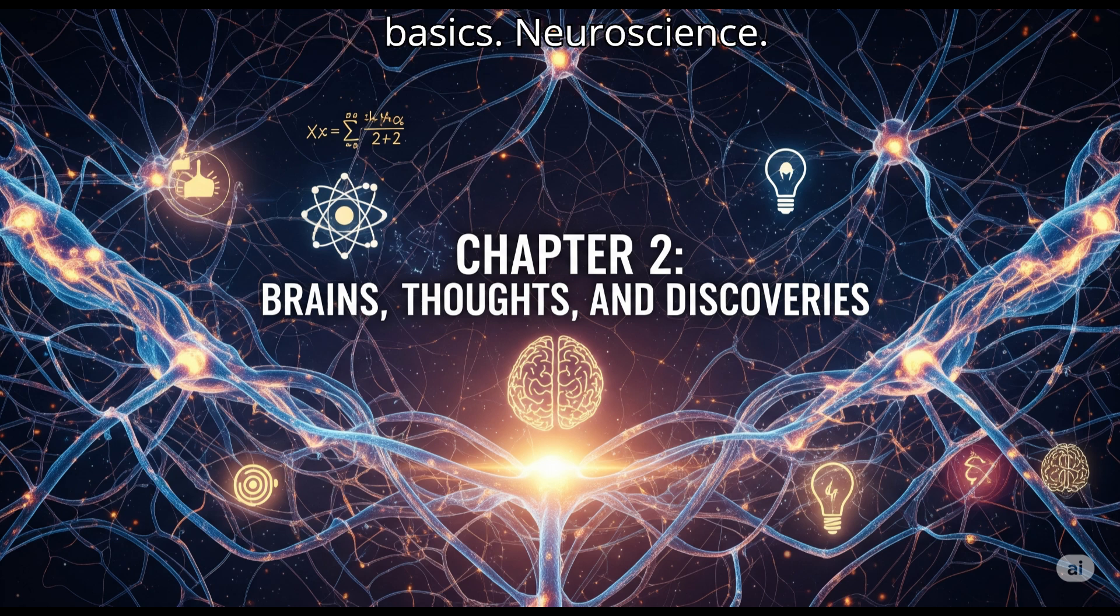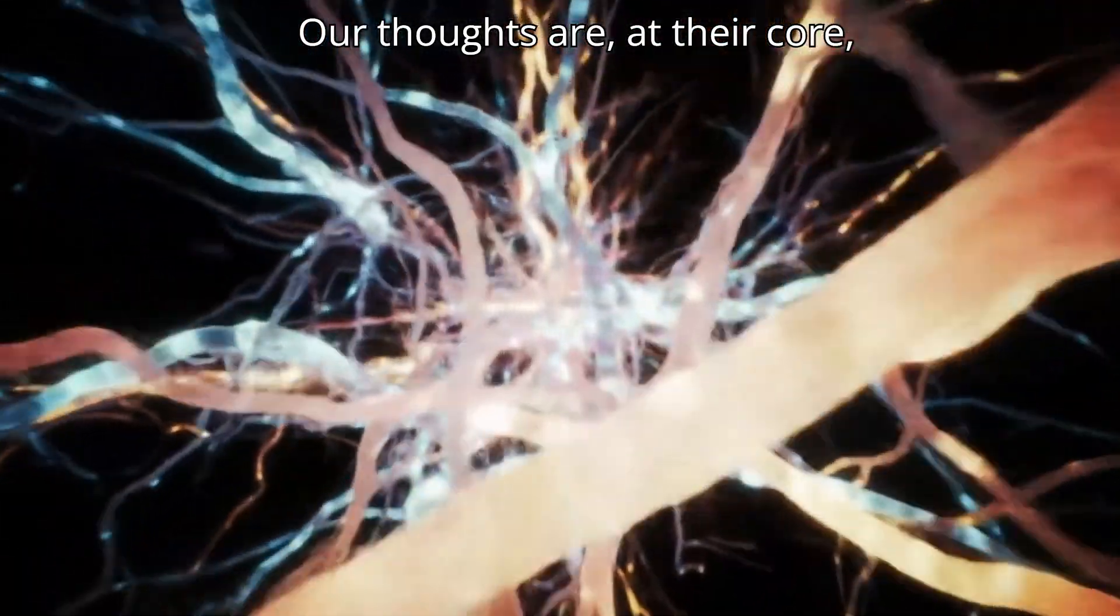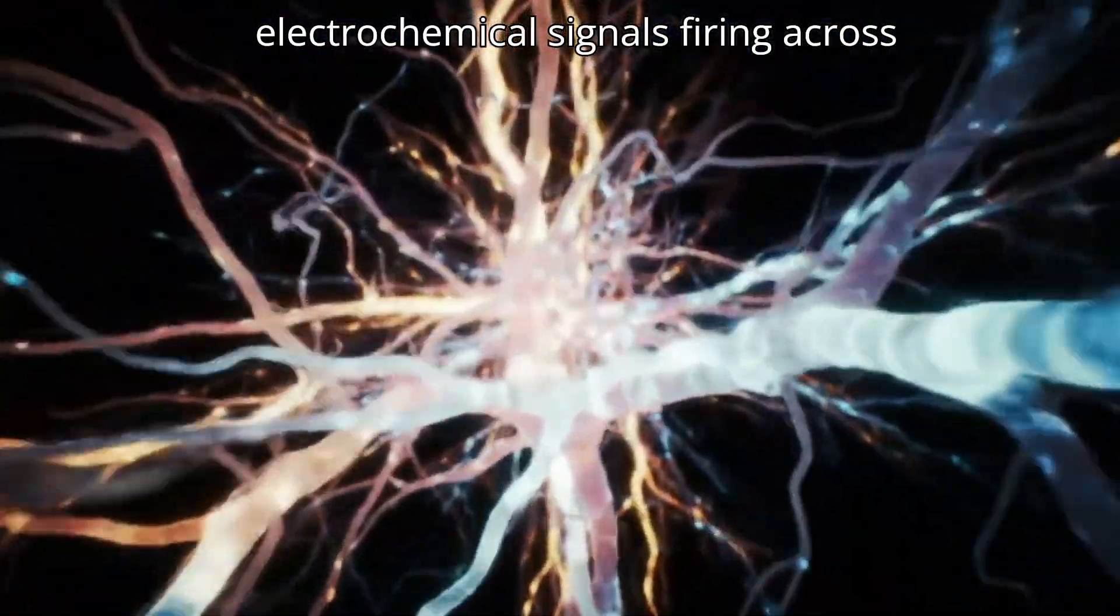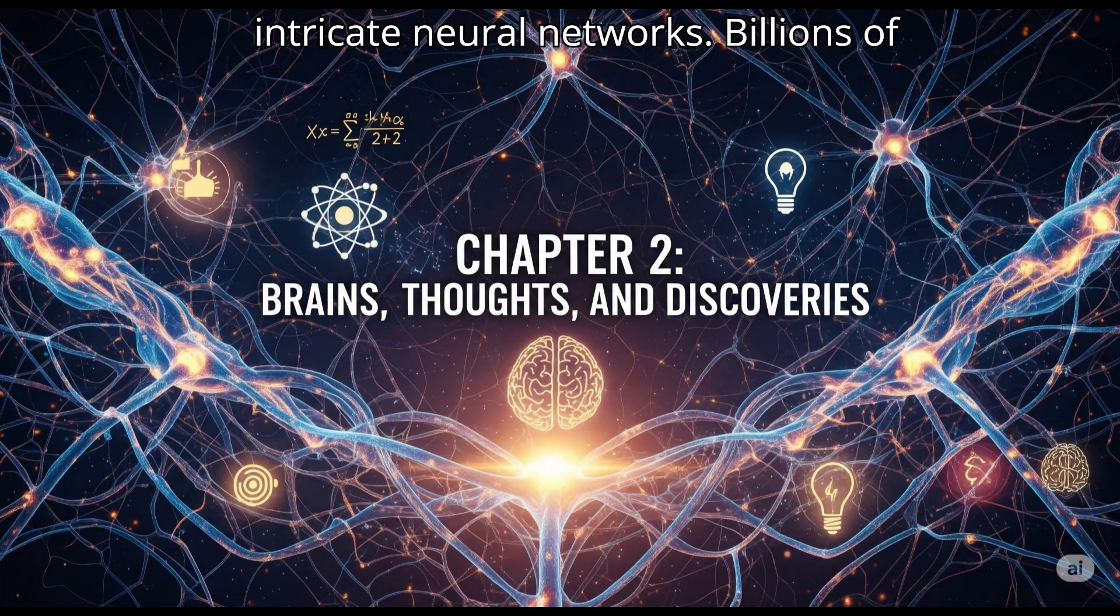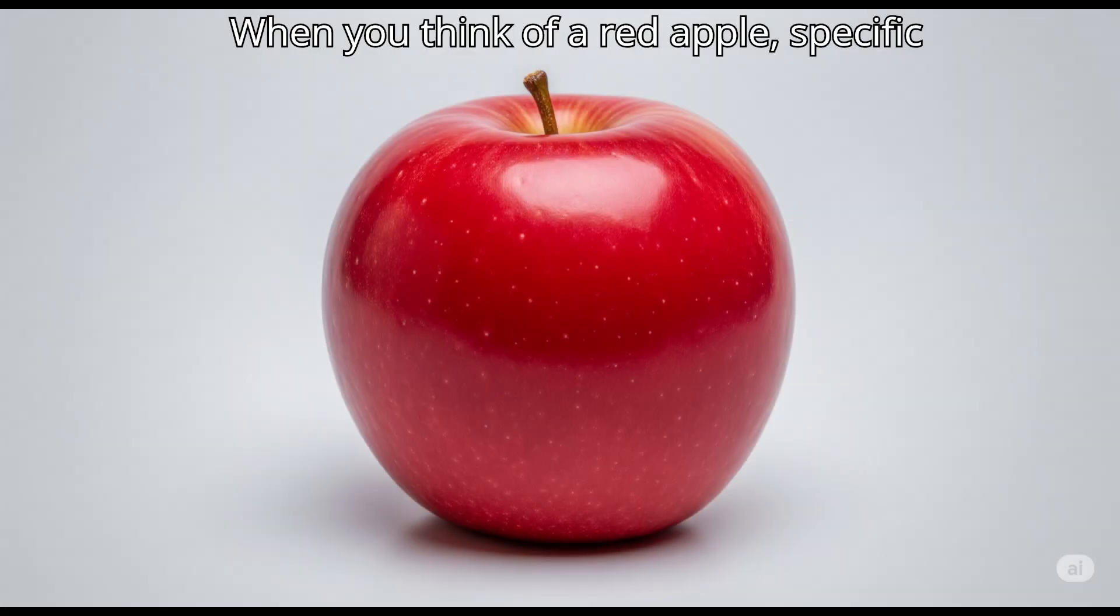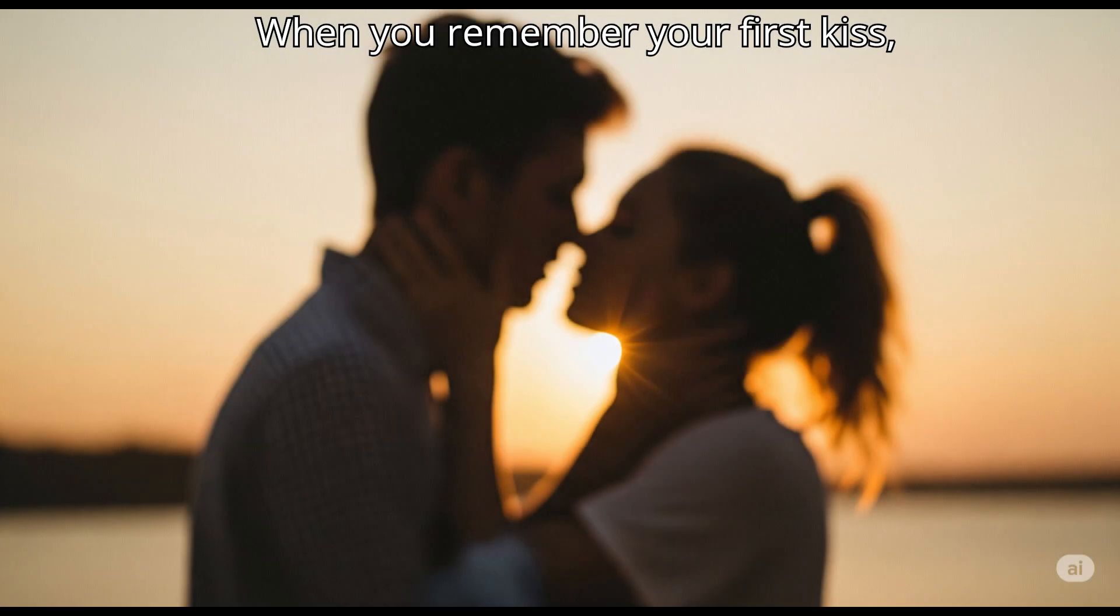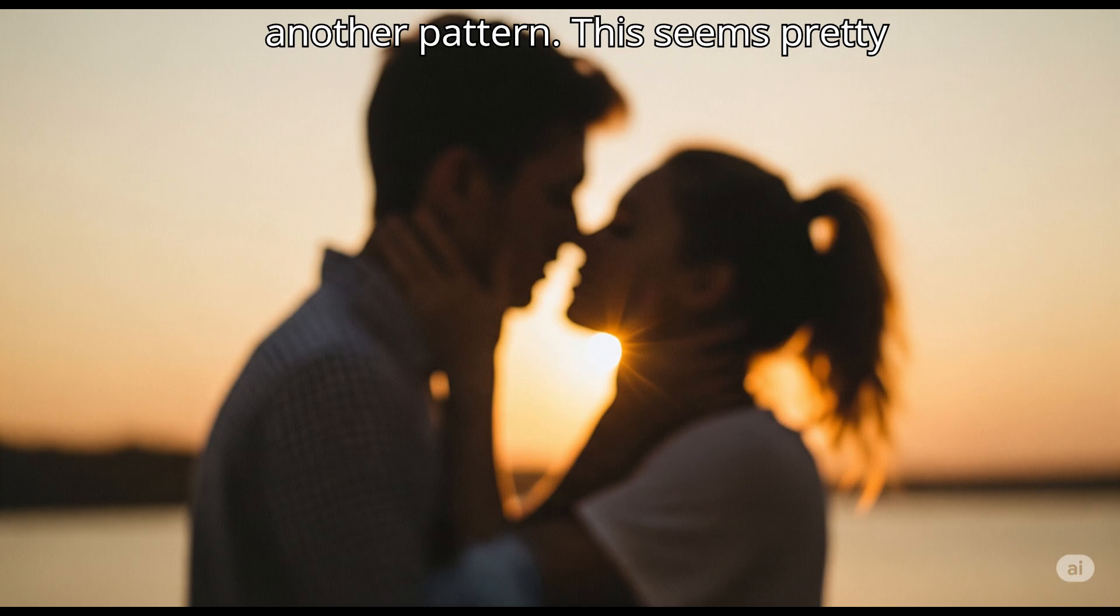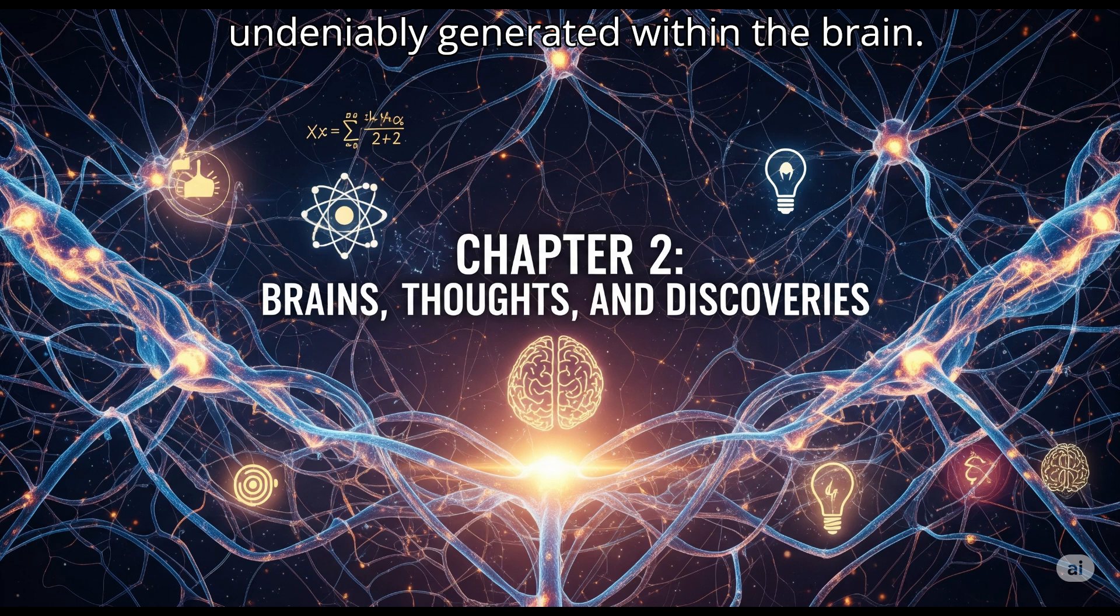Let's start with the basics. Neuroscience. Our thoughts are, at their core, electrochemical signals firing across intricate neural networks. Billions of neurons. Trillions of connections. When you think of a red apple, specific neurons activate in a specific pattern. When you remember your first kiss, another pattern. This seems pretty straightforward, right? Thoughts are undeniably generated within the brain.